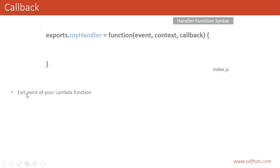Basically, this callback function is the exit point of your Lambda function. So if you want to provide some response to the user, or if you want to throw some error to the user, then you need to use this callback parameter.